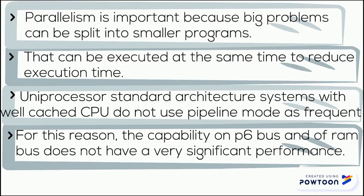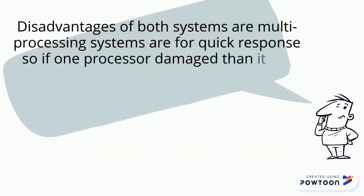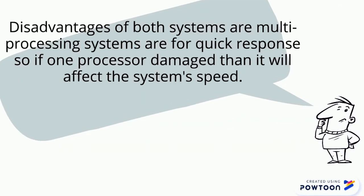A uni-processor standard architecture system with a well-caged CPU does not use pipeline mode as frequently. For this reason, the capability of the PC bus and off-RAM bus does not have a very significant performance impact.